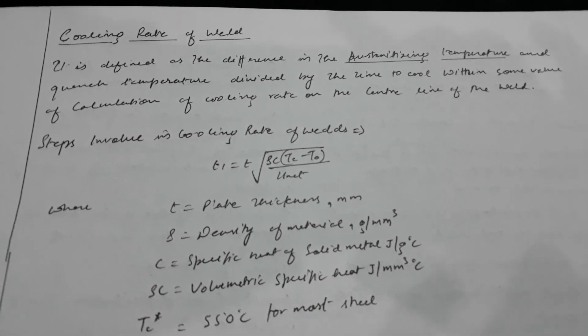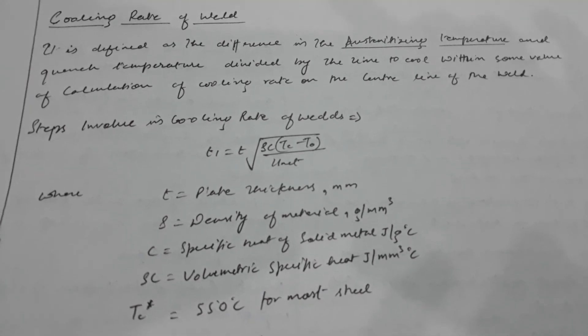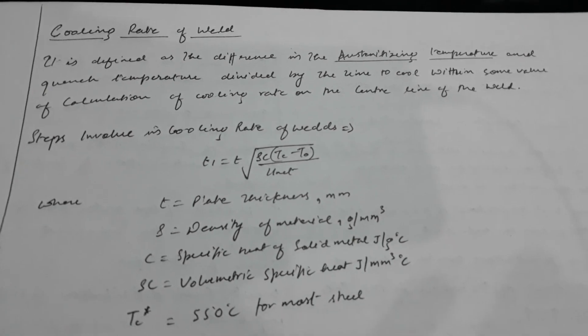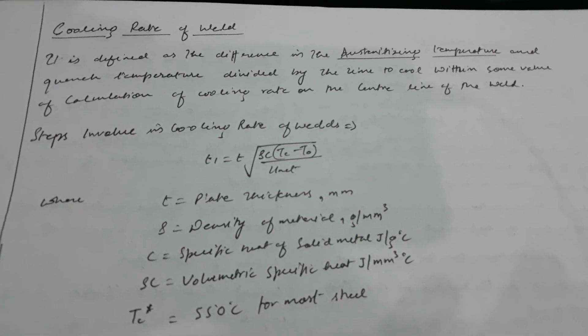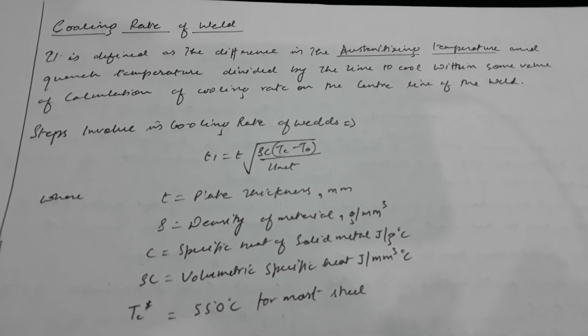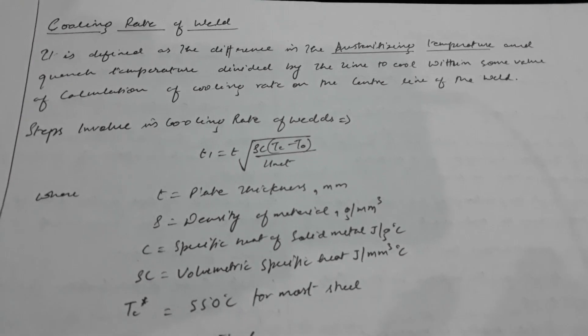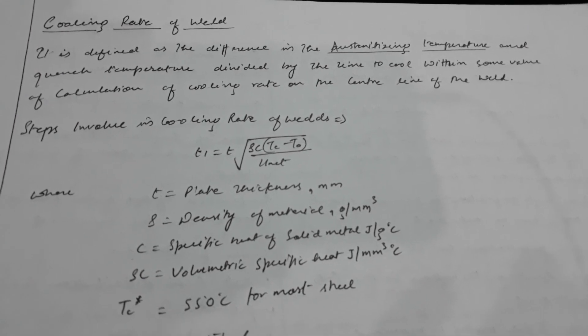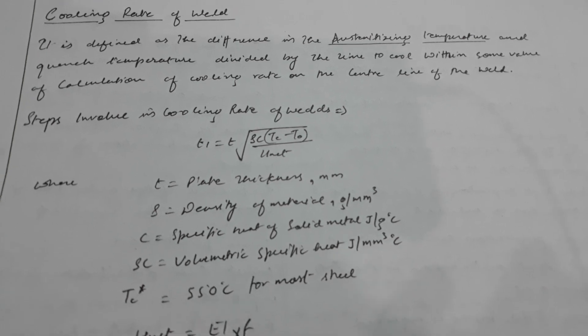Hello everyone, today we will discuss the cooling rate of weld. Basically, it is defined as the difference between austenitizing temperature and the quench temperature divided by the time to cool, with some value of calculation of cooling rate on the centerline of weld.